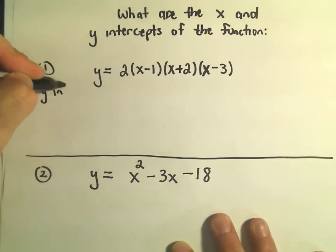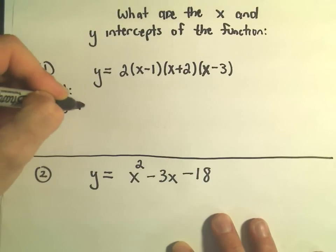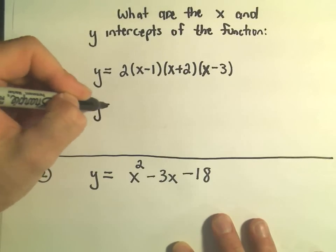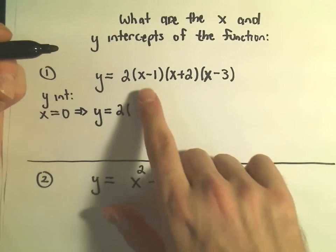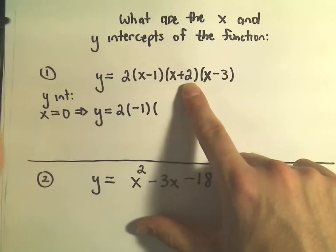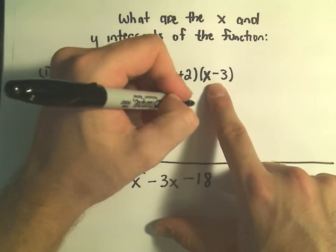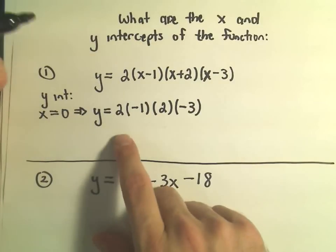To find the y-intercept, we plug in x equals 0. If we plug in x equals 0, we get y equals 2 times (0 minus 1 is negative 1), (0 plus 2 is positive 2), (0 minus 3 is negative 3).